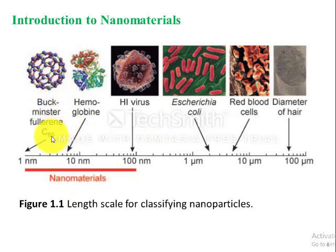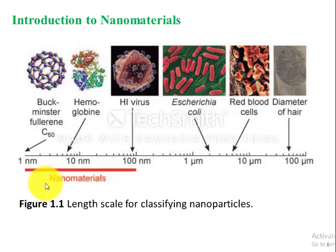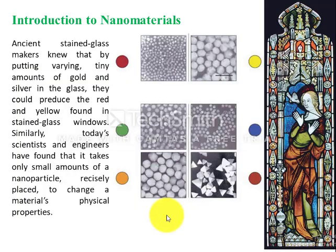Buckminster fullerene is a carbon compound in which 60 carbon atoms are interconnected forming a cage structure. Its size is 1 nanometer, as mentioned on the previous slide. If we compare the diameter of a hair to Buckminster fullerene, which is made of 60 carbon atoms and is 1 nanometer in size, we can also find nanoparticles or nanomaterials throughout history.